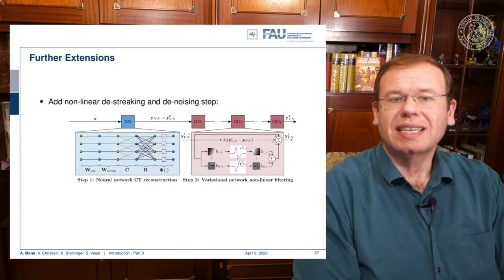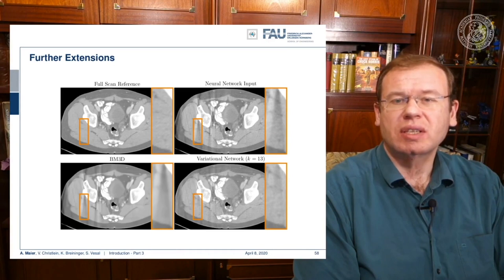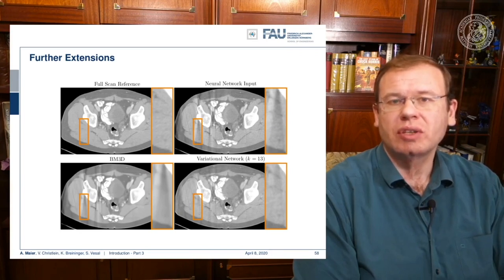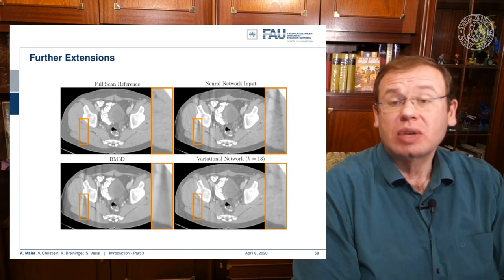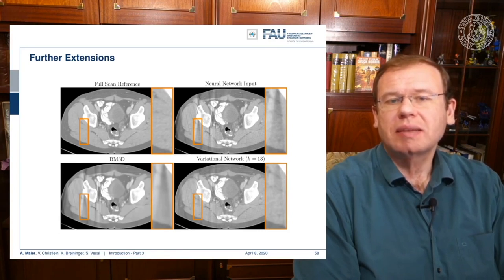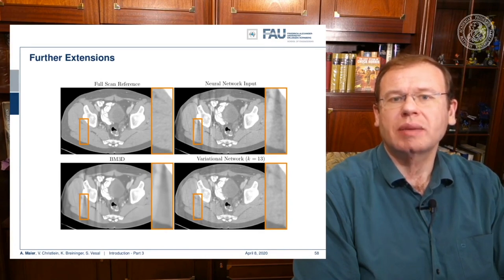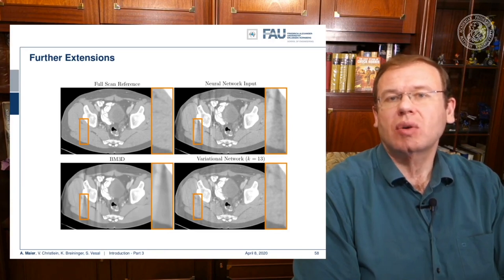You can even combine this reconstruction method with additional destreaking and denoising steps, as we will show towards the end of this lecture in detail. As a result, we can dramatically improve also the low contrast information. Here you see the full scan reference on the top left, the neural network output on the top right that still has streak artifacts, and on the bottom right the output of the new destreaking and denoising network, which is really able to reduce those streaks caused by the angular limitation. Compared to just a denoising approach on the bottom left, those streaks would be diminished but still present. Only a network trained to understand the problem of the angular limitation is able to actually reduce those artifacts efficiently.